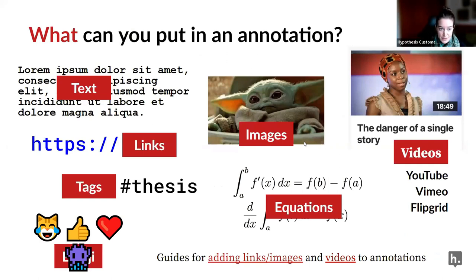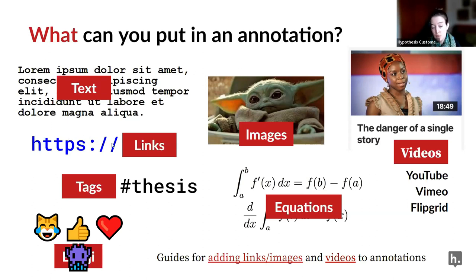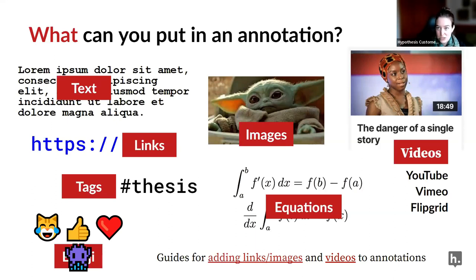So what kinds of things can you put in an annotation? Students will typically annotate with text — that's how they have conversations and reply to each other. But you can also add hyperlinks, tags, emojis, images, GIFs, and videos. If you're a math instructor, you can actually do LaTeX equations in the annotation sidebar as well. We have guides linked here for how to add these different kinds of content, but I'm going to do step-by-step demos as well.